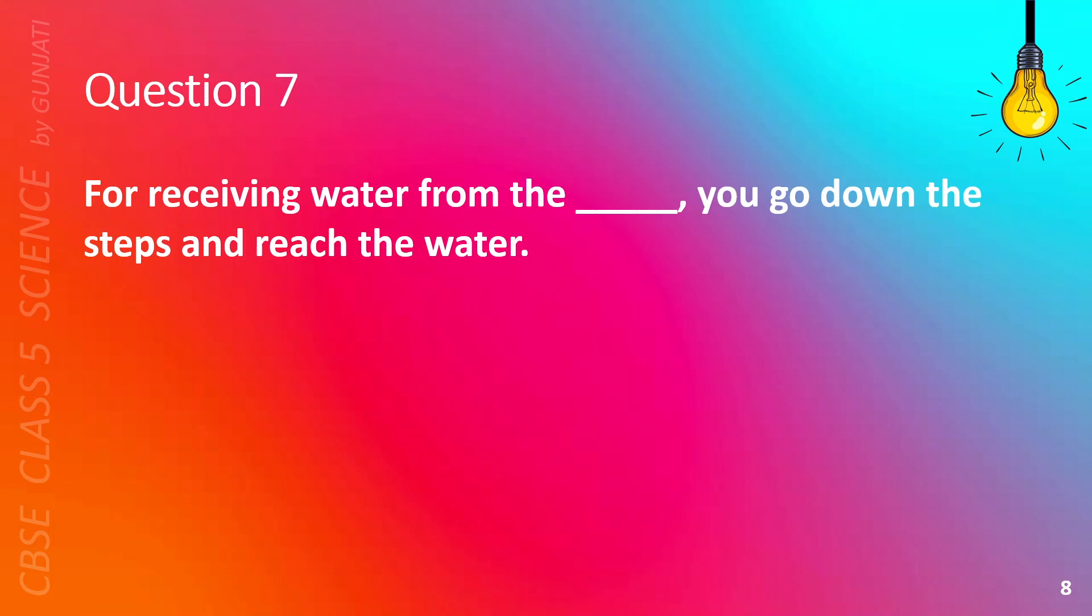Question 7. For receiving water from the blank, you go down the steps and reach the water. A. Lake, B. Stepwells, C. Soil, or D. Well. The correct answer is B, Stepwells.